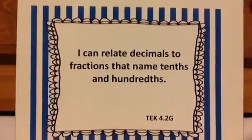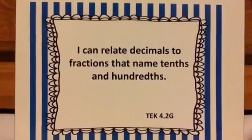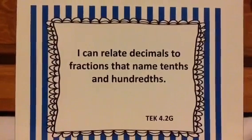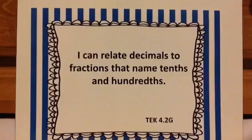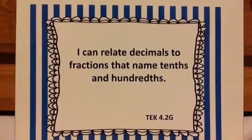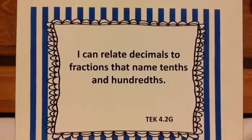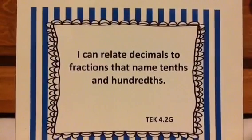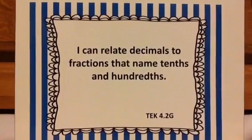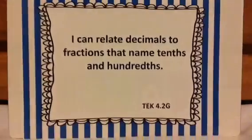Hi Scholars, let's look at TEKS 4.2G. This says I can relate decimals to fractions that name tenths and hundredths. So we are going to focus on fractions that only have ten or a hundred pieces. I know in other videos I've talked about one-third, one-fourth, one-fifth, and all of that. But for this, because decimals have a tenths and hundredths place, we're only going to focus on fractions that are like one out of ten and one out of a hundred.